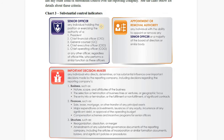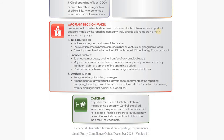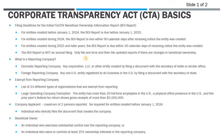Substantial control is a somewhat vague term. Some persons are de facto substantial control persons — senior officers like a president, CFO, general counsel, CEO, or COO — essentially any C-suite title. There are also catch-all provisions for any important decision maker. So you need to carefully review the hierarchy within your organization to ensure all persons with substantial control are reported on the return.